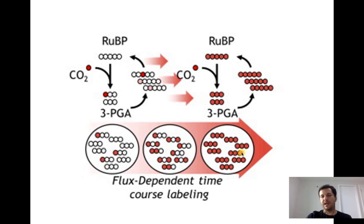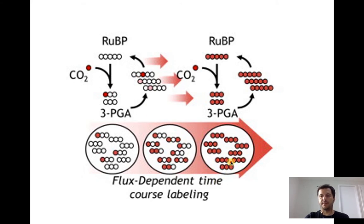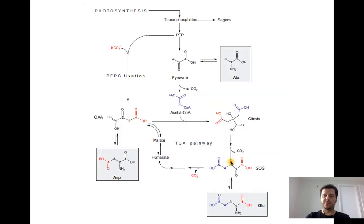Over time, you have an increase of this labeled carbon incorporation, and at the end you have all the 3-PGA containing only this labeled carbon. To measure fluxes, in most cases we must measure this over time, because time determines how much label has been incorporated.